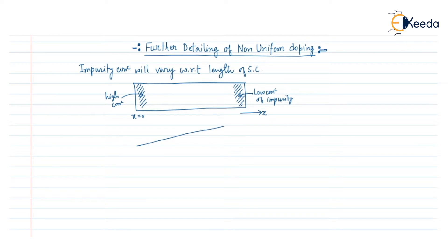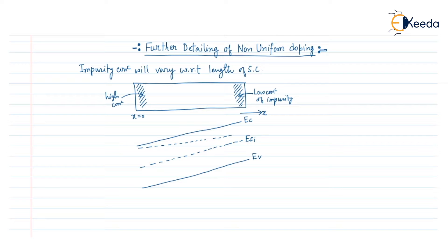The band diagram will have a tilted shape. This is the maximum energy of the valence band EV, this is the minimum energy of the conduction band EC, and in the middle there will be the Fermi level of the intrinsic material EFI, and the Fermi level of the doped material — if it is donor-doped — is EFN. In this case we have assumed N-type dopant, which is why the Fermi level is written as EFN.